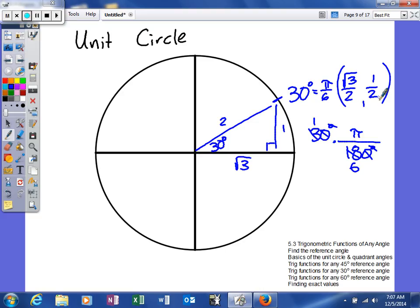Now if you draw the triangle, you can find tangent pretty easily by doing 1 over the square root of 3, and rationalize it to the square root of 3 over 3. Or you could actually use the quotient identity and say this divided by this, and simplify it to get your answer.